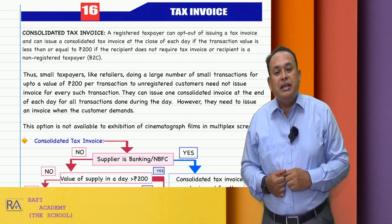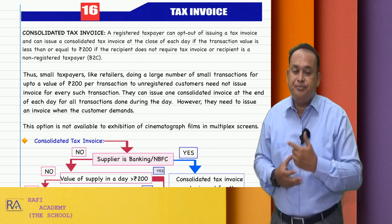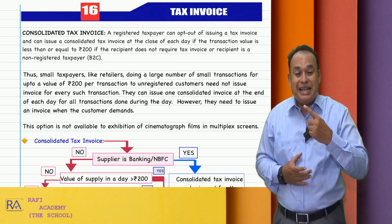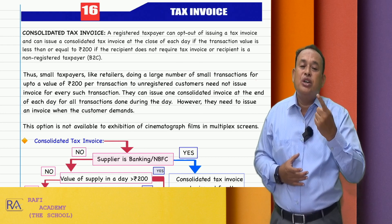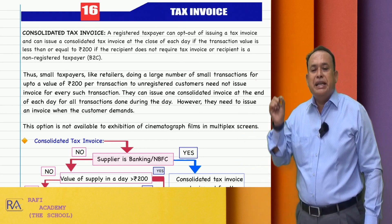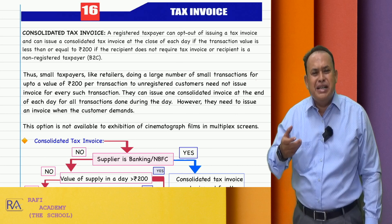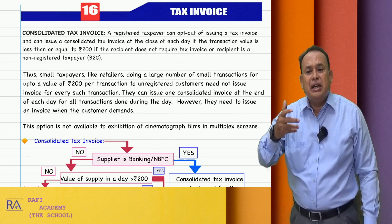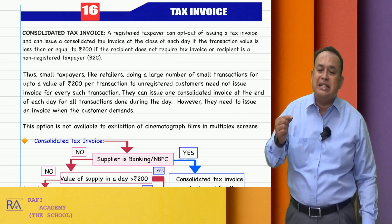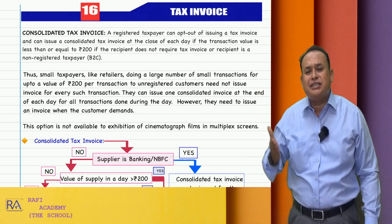This is permitted when a registered person supplies goods or services to an unregistered person, where the per-transaction value does not exceed rupees 200. A registered taxpayer can opt out of issuing a tax invoice for each transaction. They can issue a consolidated tax invoice at the close of each day if the transaction value is less than or equal to rupees 200, and if the recipient does not require a tax invoice or the recipient is a non-registered taxpayer.